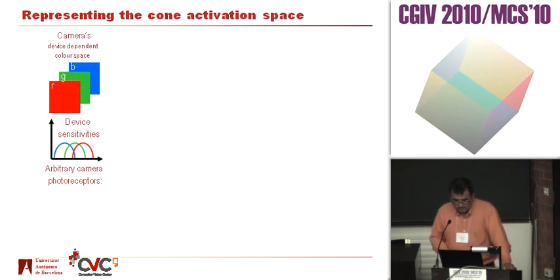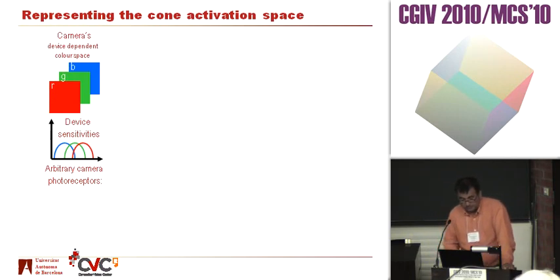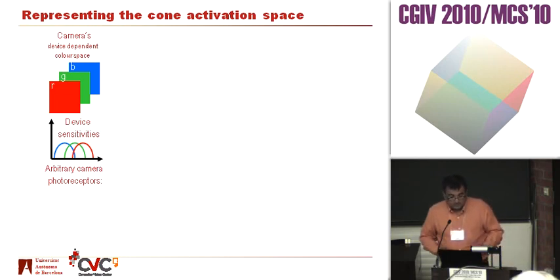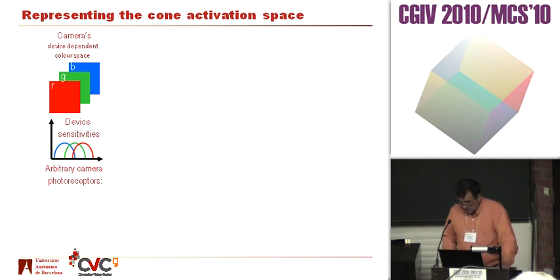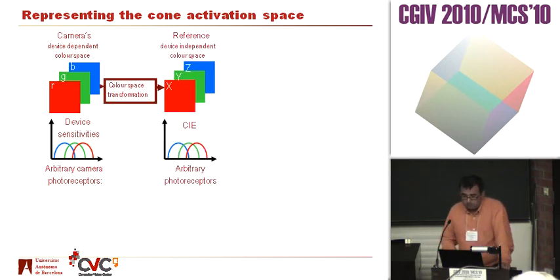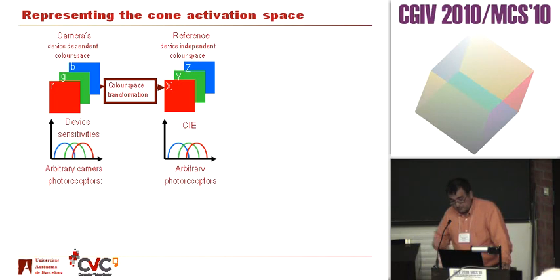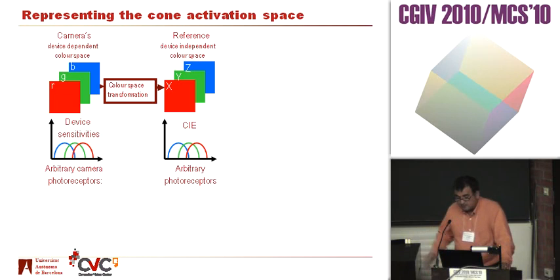I'm trying to outline the problems that we have with representing everything in LMS. You can start with a camera, which represents pictures in a device-dependent color space, which are basically arbitrary photoreceptors. Then you have to do some color space transformation to transform these arbitrary photoreceptors into some device-independent color space, like CIE XYZ.